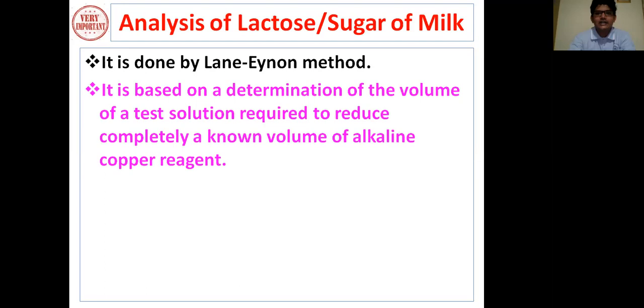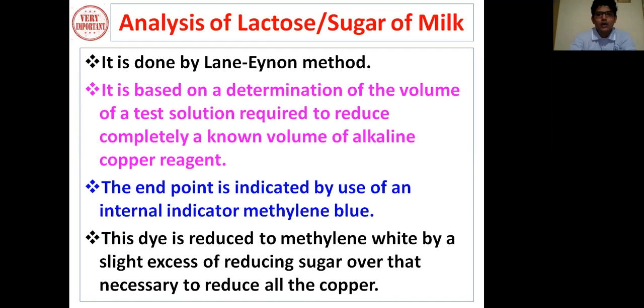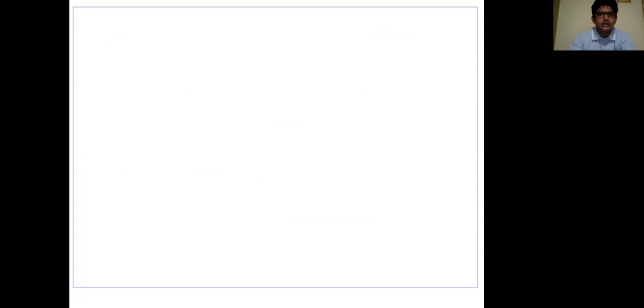It is based on determination of volume of a test solution required to reduce completely a known volume of alkaline copper reagent. The end point is indicated by use of an internal indicator, methylene blue. This dye is reduced to methylene white by a slight excess of reducing sugar over that necessary to reduce all the copper.